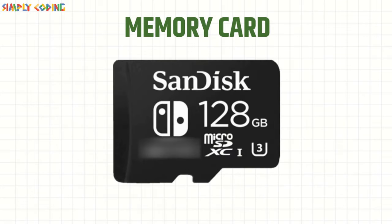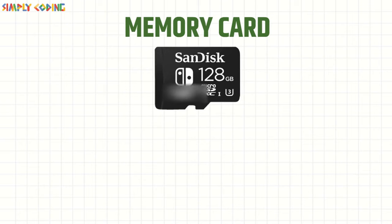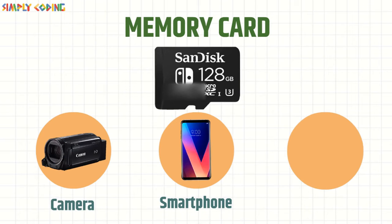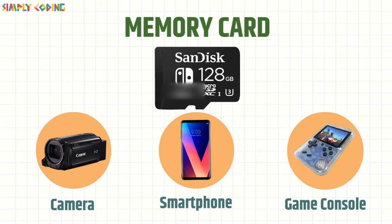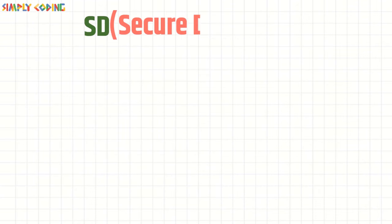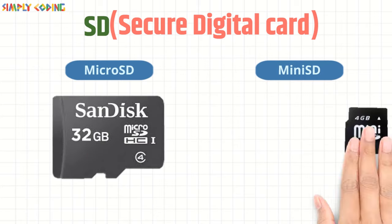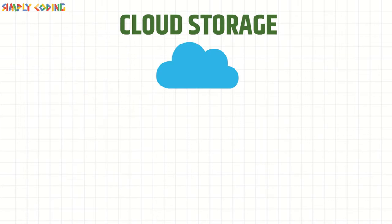Memory cards are used to store photos and videos in cameras, smartphones, and gaming consoles. They can store images up to 128 GB. SD or Secure Digital cards come in Micro SD or Mini SD size as well.